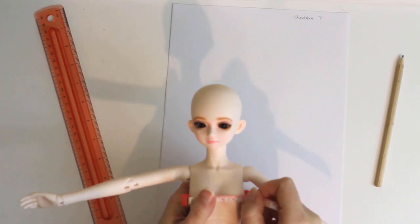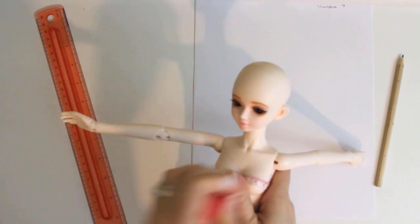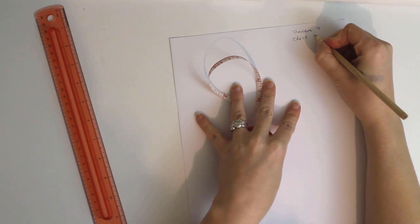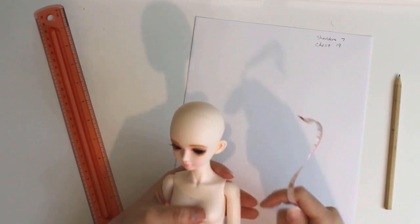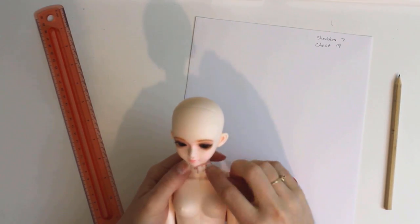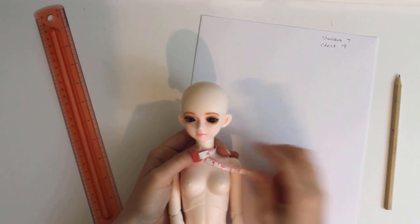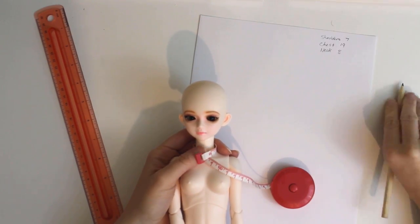Next, measure around the fullest part of the doll's chest. For me, this is 19 centimeters. Then measure around the neck. You don't want your measuring tape to be right against the doll's neck unless that's where you want the collar to rest. Instead, loosen it just a bit. I add a centimeter to mine, so I get 8 centimeters.